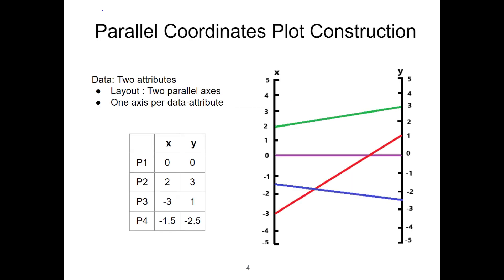Parallel coordinates plot construction. This is the same table we looked at earlier. Each line on the parallel coordinates plot represents one point in the table. This parallel coordinates plot shows two data attributes, x and y, with two parallel axes.